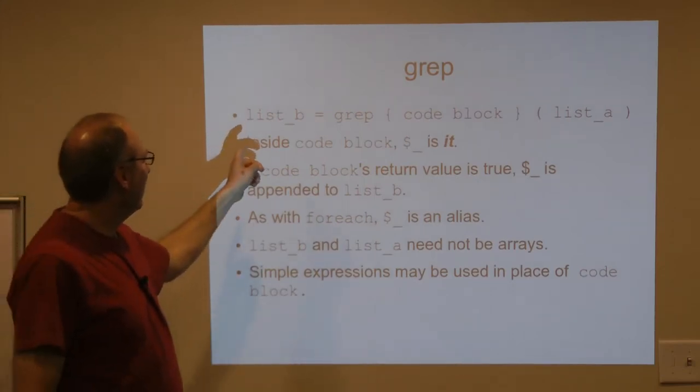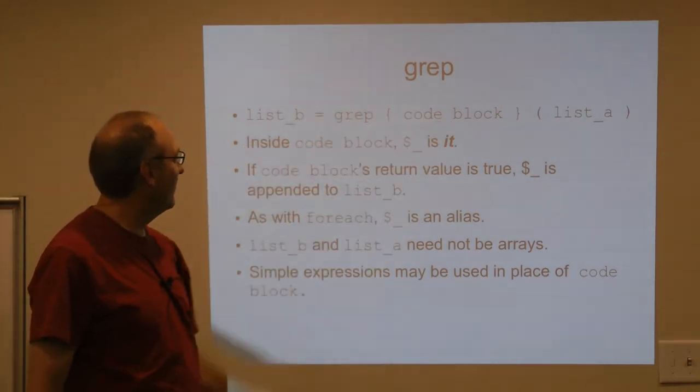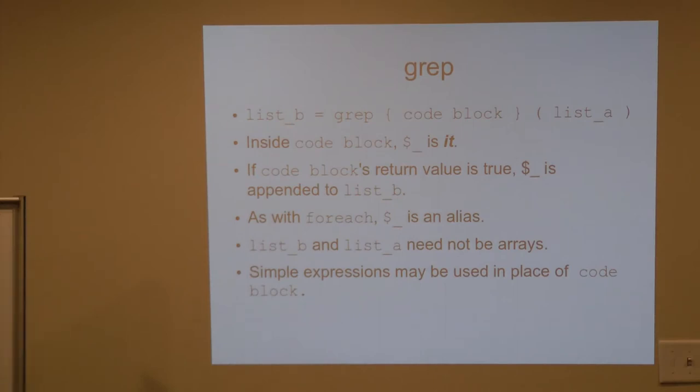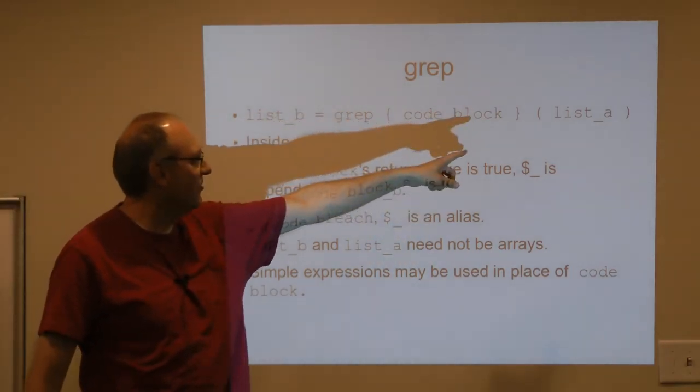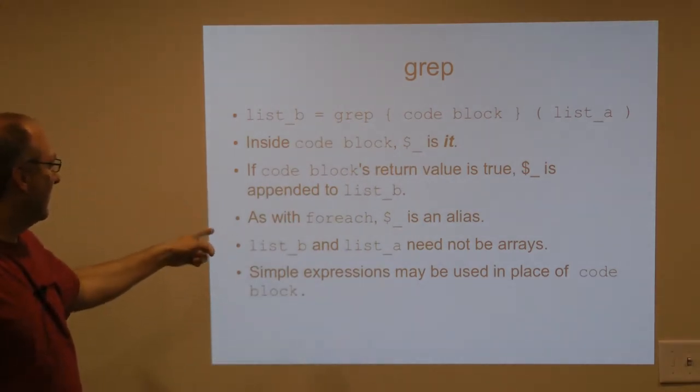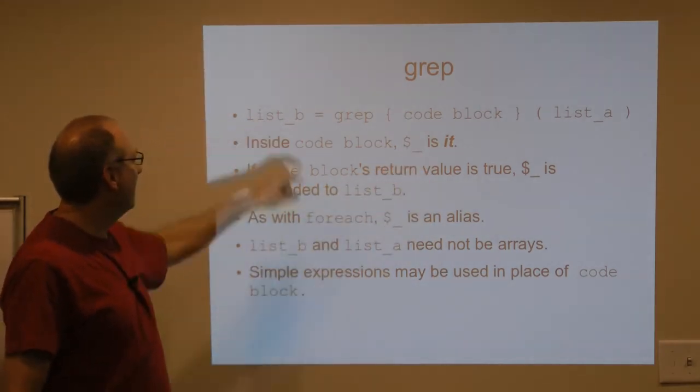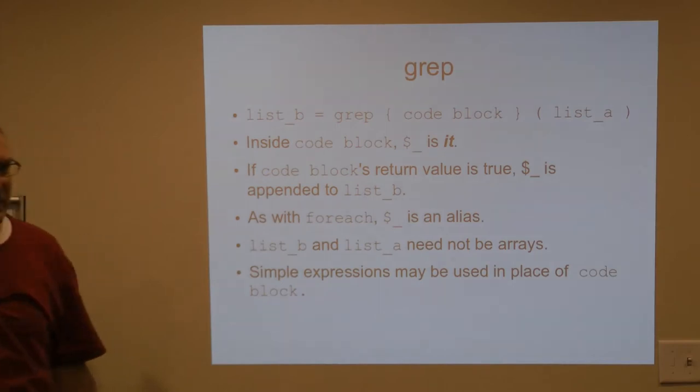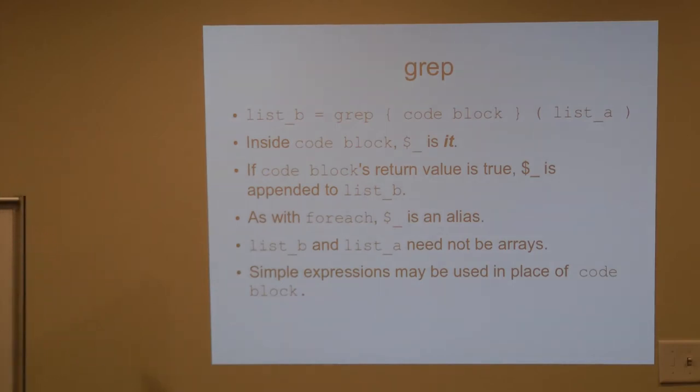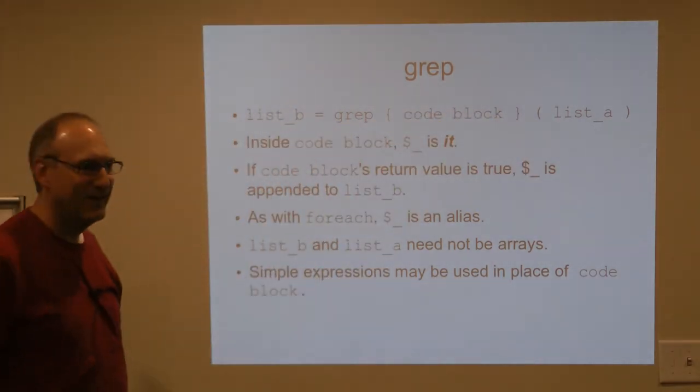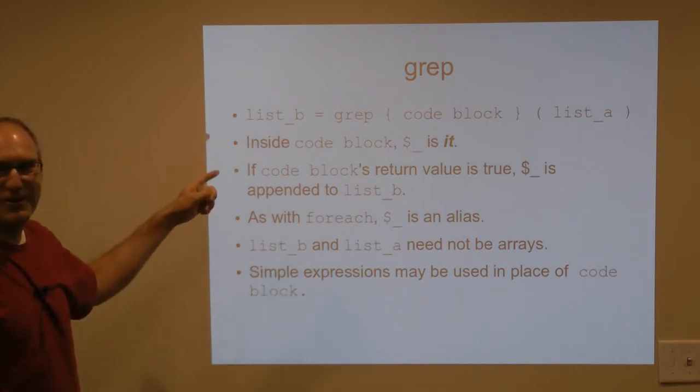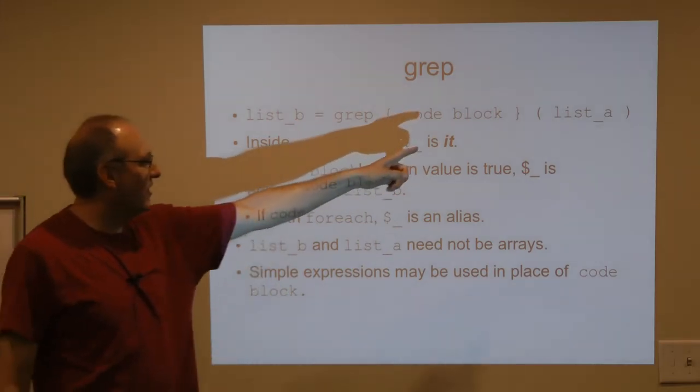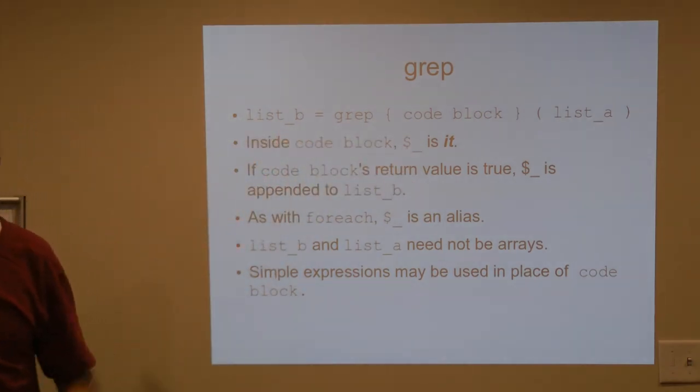So grep, kind of a summary of it. List B equals grep code block list A. Inside code block, the it variable is it. That is the element that is being iterated over, and that little subroutine gets called again and again. The code block gets called again and again for each item in list A. If the code block's return value is true, then the element that's in the it variable gets pushed into your list, your return value. As with for each, the it variable is an alias. And so, if you were to modify your it variable inside of your grep, then you've just clobbered your list here. So you have to be careful about that. I wouldn't recommend doing it intentionally, at least in the case of grep.